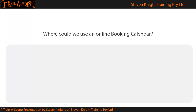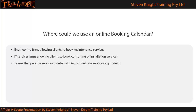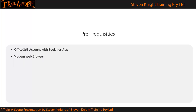I can think of a couple of examples which I'm going to bring up on this slide in a moment, but if you can see examples of where people can use an online calendar in their business, put some comments in the comments below. If you want to try these exercises yourself, you'll need an Office 365 account with the Bookings app.